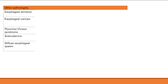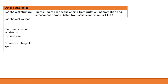Esophageal strictures are a tightening or narrowing of the esophagus. You get strictures from irritation and inflammation, which causes fibrosis and tightening. The irritation often arises from caustic ingestion or GERD — both cause irritation, inflammation, and fibrosis.